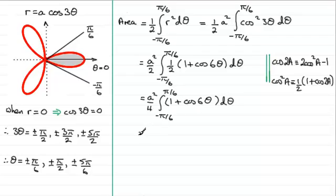So integrating this is going to give us, integrating 1, that's going to be theta. Integrating cos 6 theta, that's going to be 1 sixth sine 6 theta. And so we've got our limits, again minus pi upon 6 to pi upon 6.